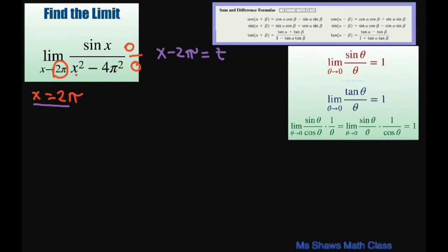We want our t to approach 0 so we can use this format to help find us the limit. So to do that, notice that as t approaches 0, then our x is going to approach 2π.